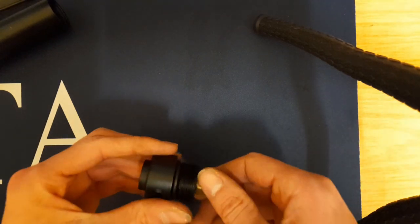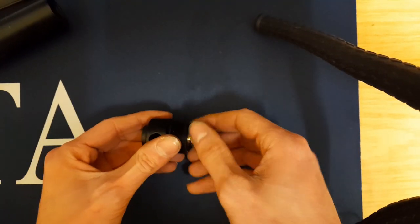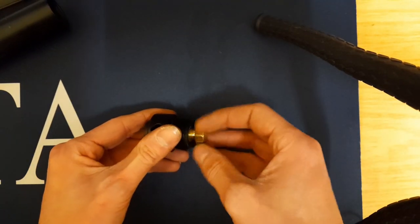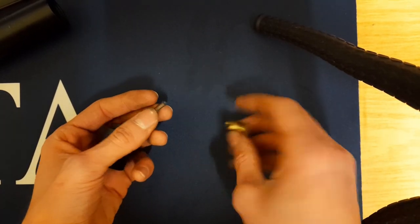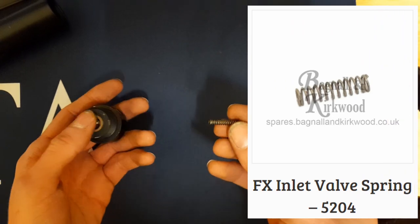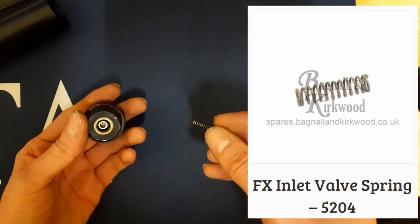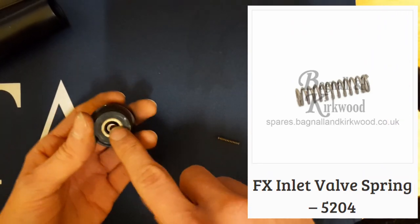Inside here what you're going to find is the inlet valve spring - these can sometimes get rusty and need to be replaced. And inside here you're going to find the inlet valve cone.